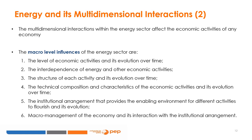The macro-level influences of the energy sector are: one, the level of economic activities and its evolution over time; two, the interdependence of energy and other economic activities as well as interactions among economic activities; three, the structure of each activity and its evolution over time; four, the technical composition and characteristics of the economic activities and their evolution over time; five, the institutional arrangement that provides the enabling environment for different activities to flourish and its evolution; and six, macro management of the economy and its interaction with the institutional arrangement.